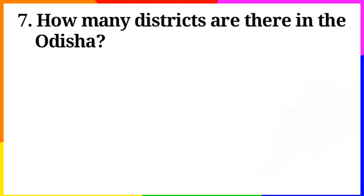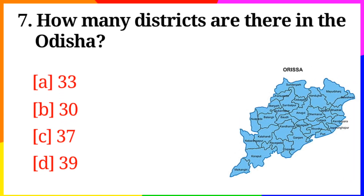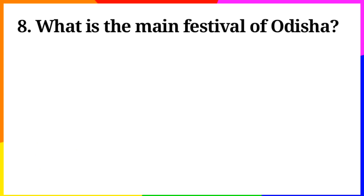Question No. 7: How many districts are there in Odisha? Option A: 33, B: 30, C: 37, D: 39. Answer is Option B: 30.